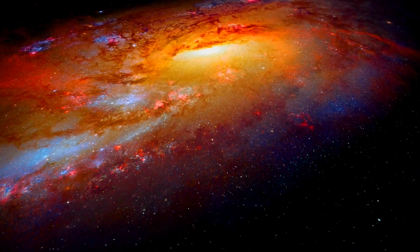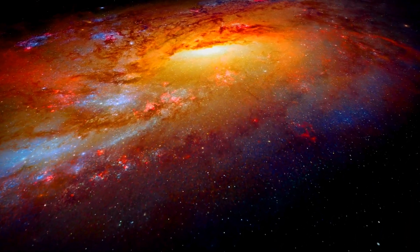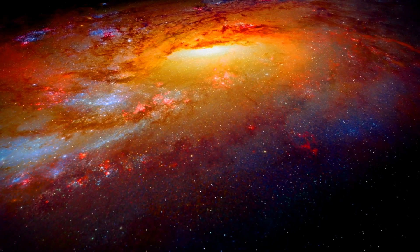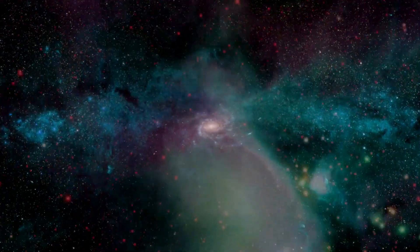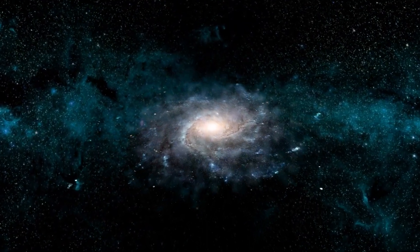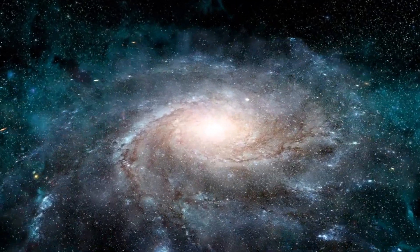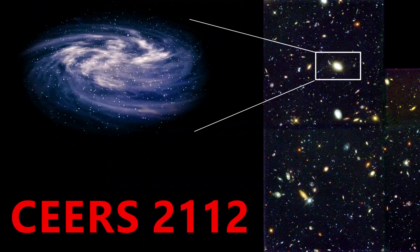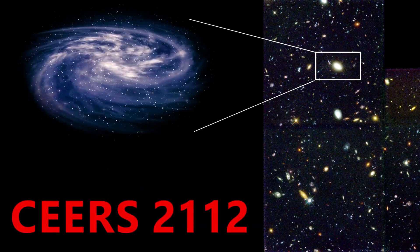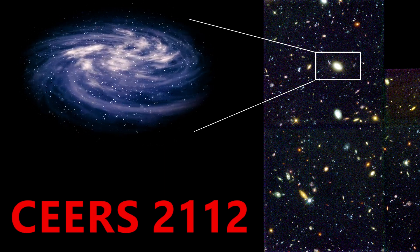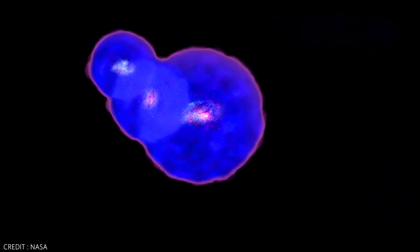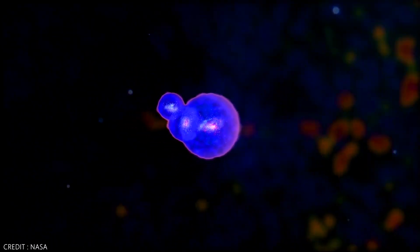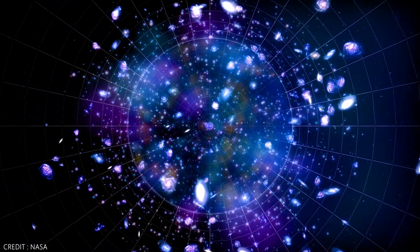Recent data from the Webb Telescope challenges the notion that barred spirals only emerged recently. The discovery of spiral galaxy Sears 2112 indicates that galaxies resembling our own existed nearly 12 billion years ago, when the universe was only 15% of its current age. Sears 2112 was observed at a redshift of 3, corresponding to when the universe was 2.1 billion years old. This means the light from the galaxy took nearly 12 billion years to reach the James Webb Space Telescope.